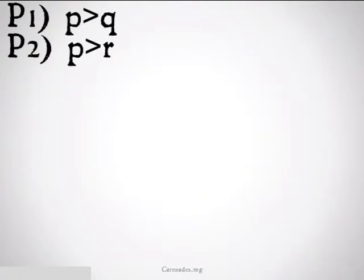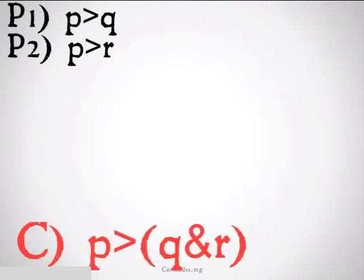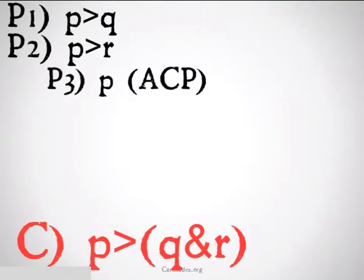So the first one was premise one, P implies Q, premise two, P implies R, and we want to conclude P implies Q and R. This seems extremely intuitive, and it might not be that hard to just prove with the 18 rules of inference. But in order to practice our conditional proof, we're going to do it that way. So the first part of our conclusion, the antecedent of that implication is P. So we're going to want to assume in our assumed conditional proof P. We'll write ACP and we'll draw a line going down.